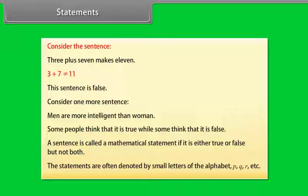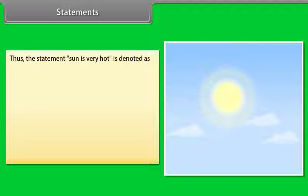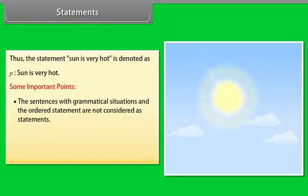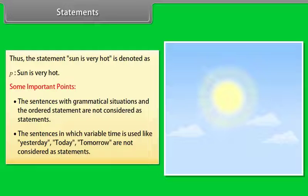Statements are often denoted by small letters of the alphabet: P, Q, R, etc. Thus, the statement 'Sun is very hot' is denoted as P: sun is very hot. Some important points: sentences with grammatical issues and exclamatory statements are not considered as statements. Sentences in which variable time is used, like yesterday, today, tomorrow, are not considered as statements.